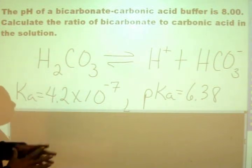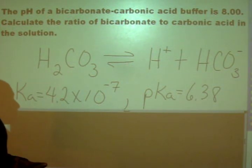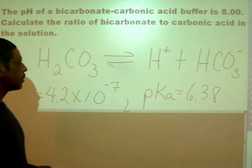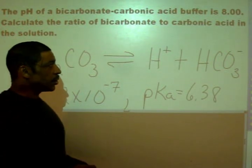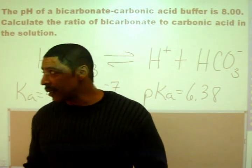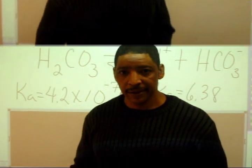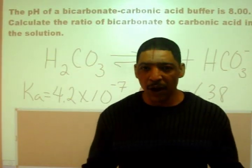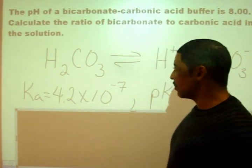The pH of a bicarbonate carbonic acid buffer is 8.0. Calculate the ratio of bicarbonate to carbonic acid in the solution.